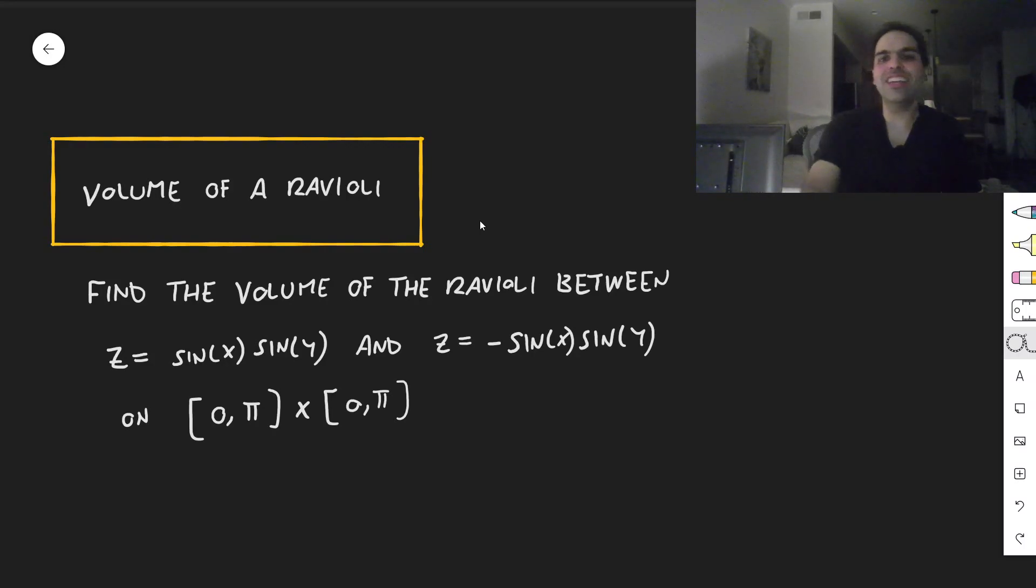So today, let's find the volume of a ravioli squeezed between sine of x sine of y and minus sine of x sine of y, on the square [0, π] × [0, π]. And what this means is that x is between 0 and π, and y is between 0 and π.